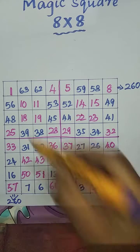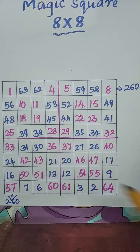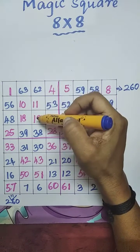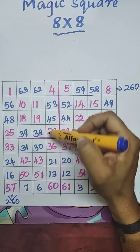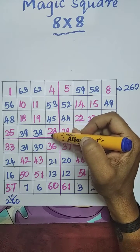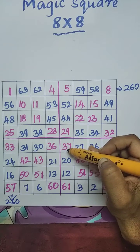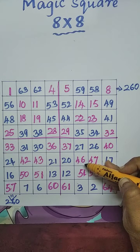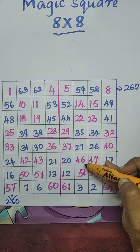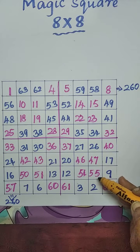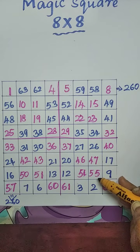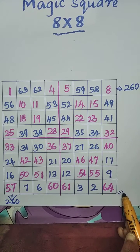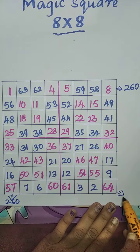Now we can check diagonal wise. They are 1 plus 10, 11. 11 plus 19, that is 30. 30 plus 28, 58. 58 plus 37, 95. 95 plus 46, 141. 141 plus 55, that is 196. 196 plus 64, that is 260.